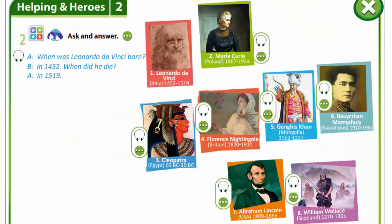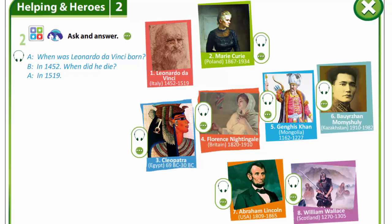In exercise 2, before asking and answering the questions, I suggest you remember how we speak about years. We divide the year into halves and pronounce each part. For example, 1533, 1709, 1945.